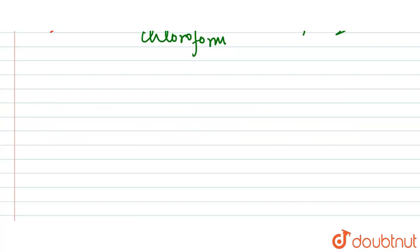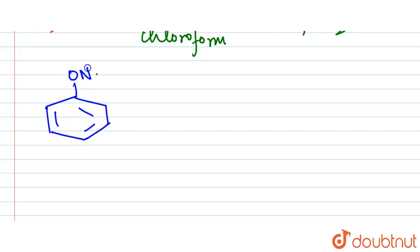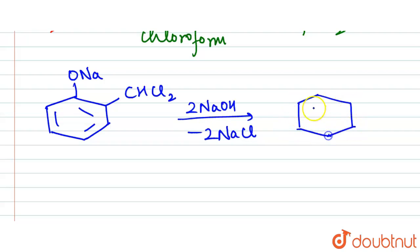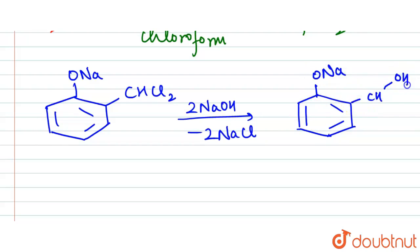We have removal of NaCl and the water molecule. Then the formation of this product: we have ONa, CHCl2, and 2NaOH reacting to give 2NaCl. After this, we have ONa, CH, OH, and OH.